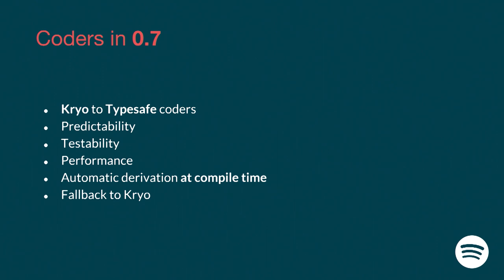So we decided to do something that works automatically at compile time using a library called Magnolia. Whenever you use Scio 0.7 and need a coder for a type, most of the time it's going to derive it for you statically. But if it can't do it for some reason, it falls back to Kryo. So instead of using Kryo dynamically all the time, 90–95% of the time we'll have something very static and nice — and when it doesn't work, it still works via the fallback.